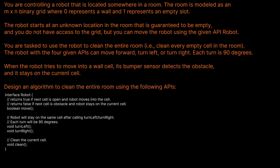Let's read the question prompt. You are controlling a robot located somewhere in a room. The room is modeled as an m by n binary grid where zero represents a wall and one represents an empty slot. The robot starts at an unknown location in the room but it's guaranteed to be empty, and you do not have access to the grid — but you can move the robot using the given API. You are tasked to use the robot to clean the entire room, i.e., clean every empty cell.